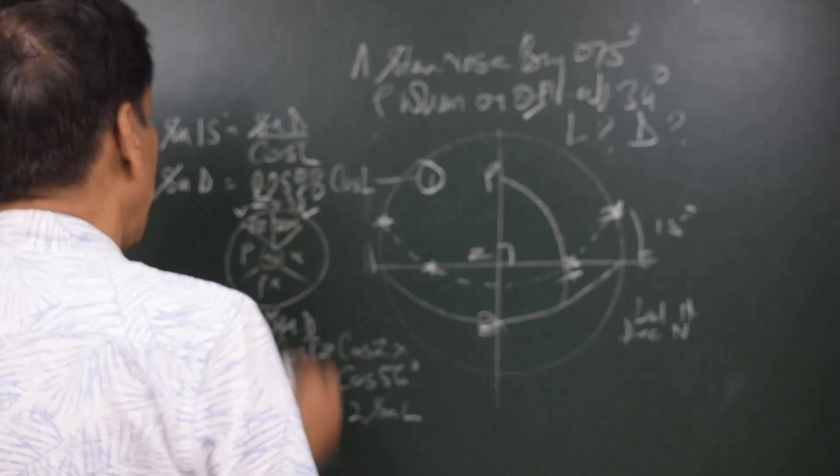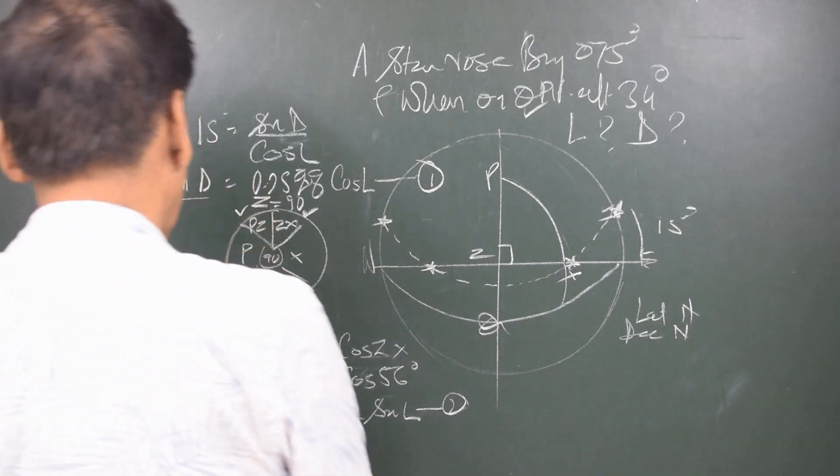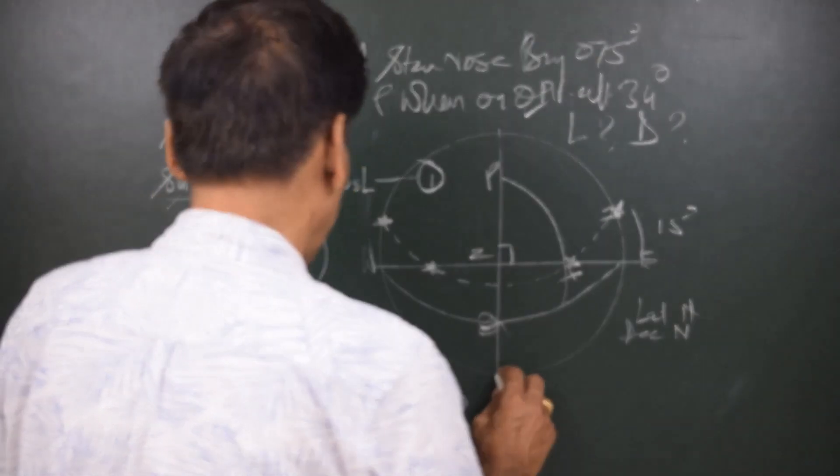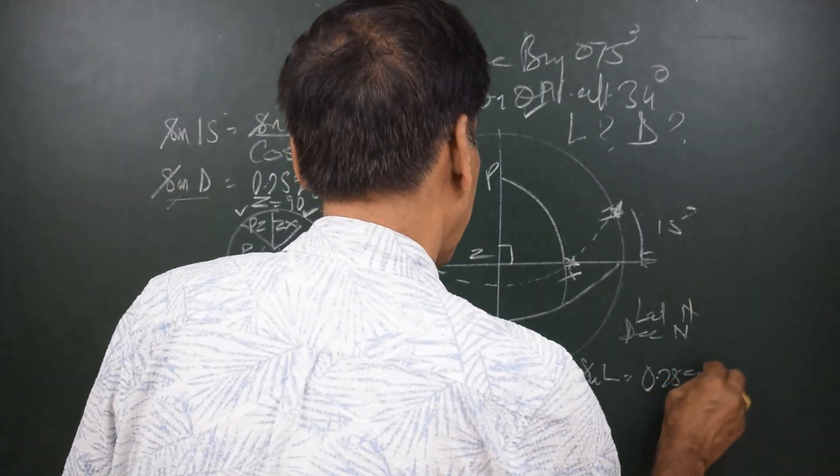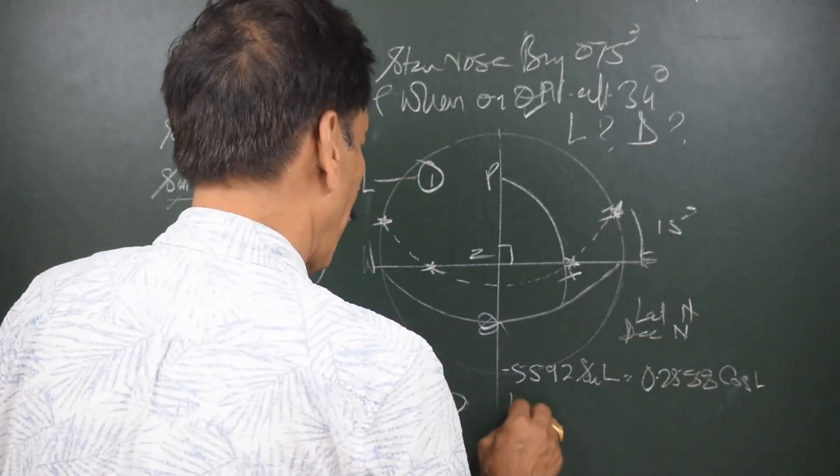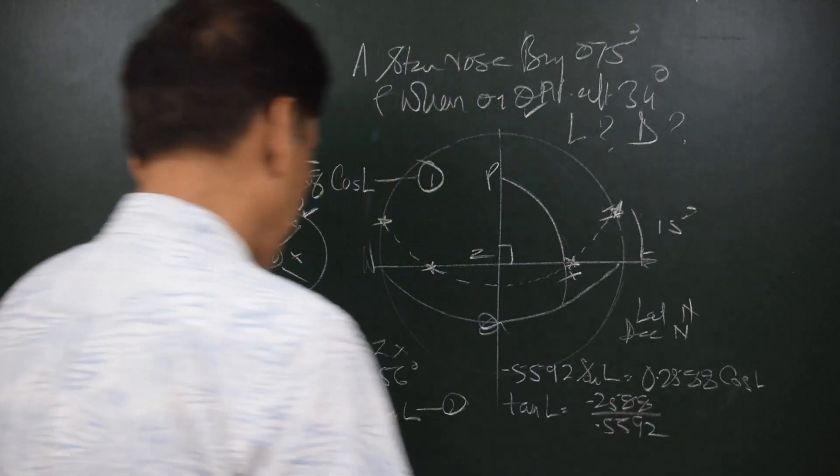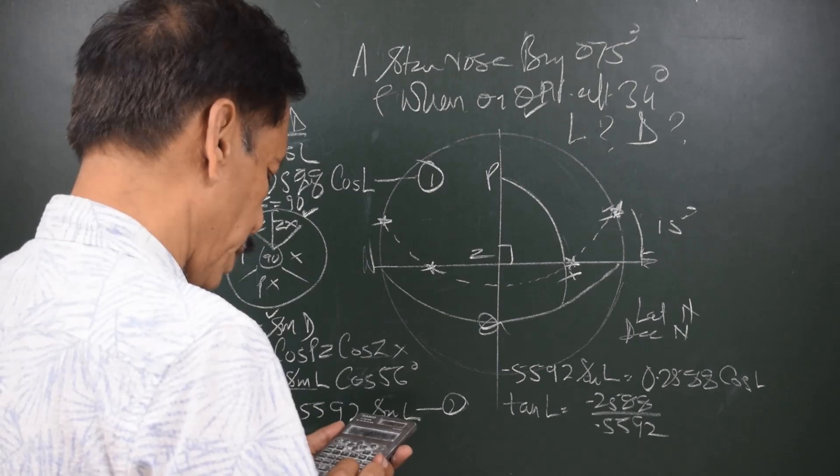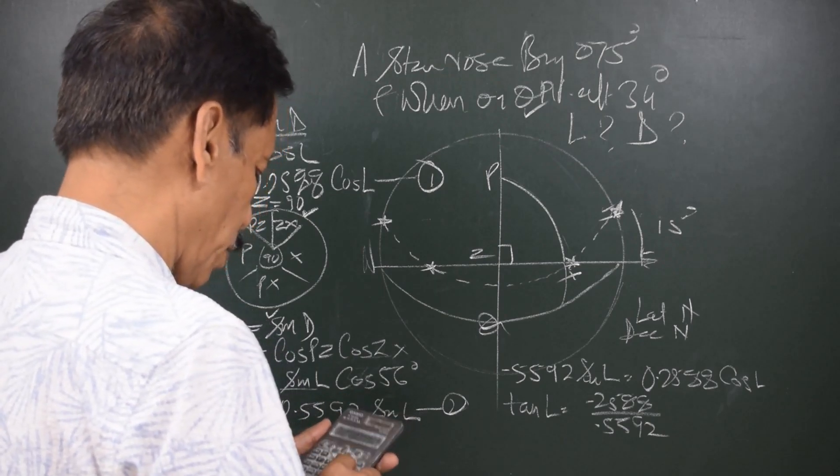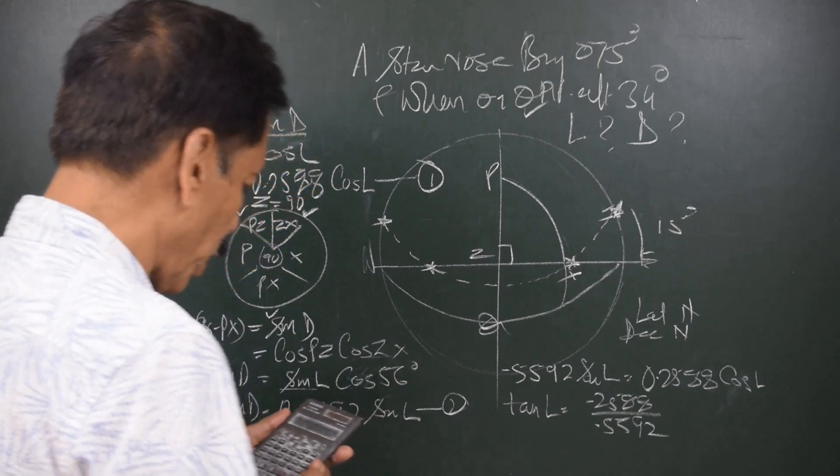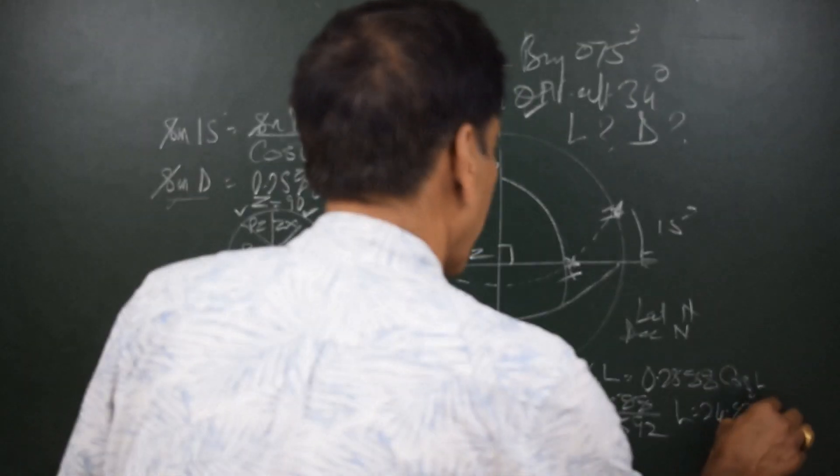So, we have sin D is equal to 0.5592 sin L. So, we already have sin D is equal to 0.2588 cos L. So, in both these equations, equation 1 and 2, we have the left hand side as sin D. So, we can equate the right hand side. And we can say that 0.5592 sin L is equal to 0.2588 cos L. Cos L comes on this side. It will become tan L equal to 0.2588 divided by 0.5592. It gives me latitude as 24.83 degrees north.